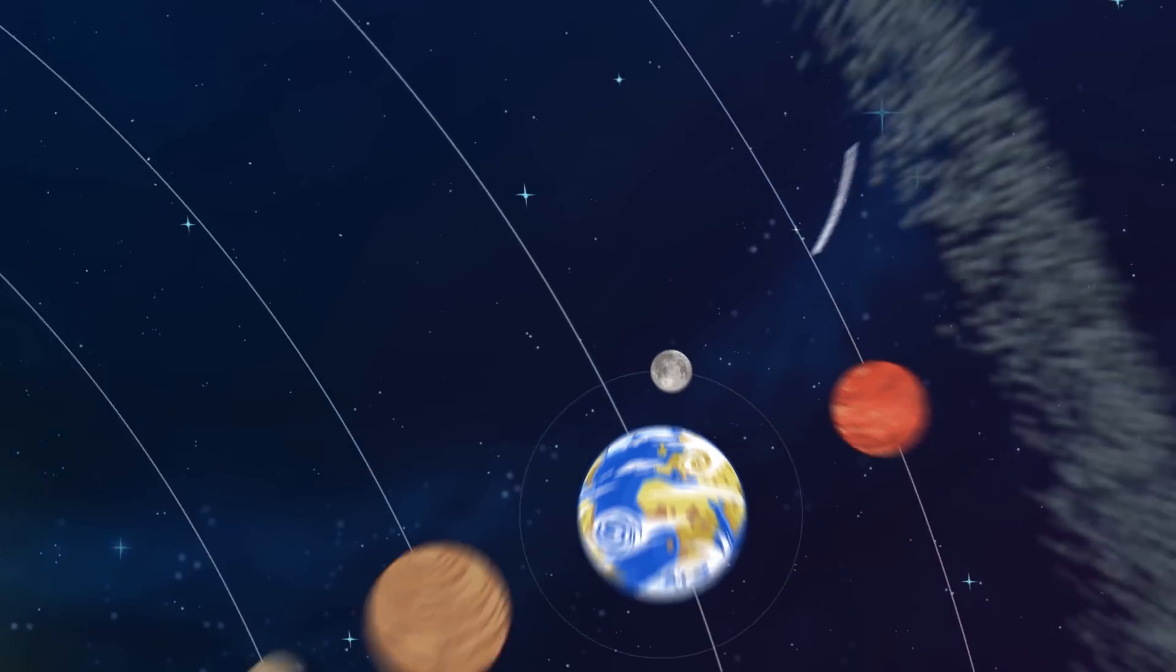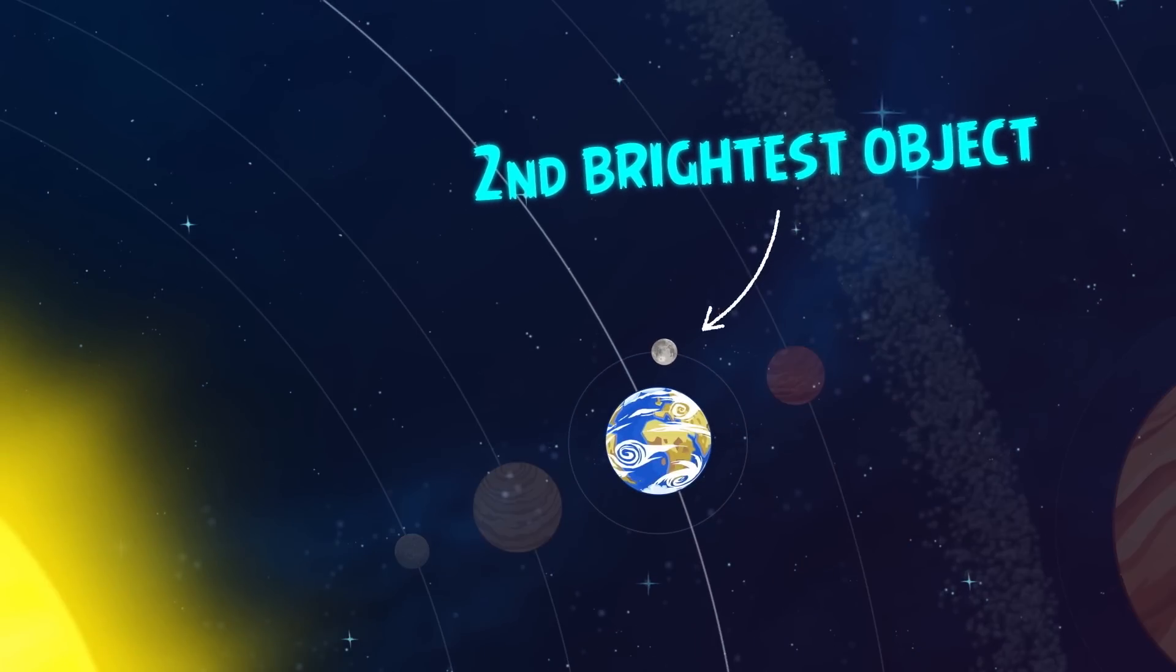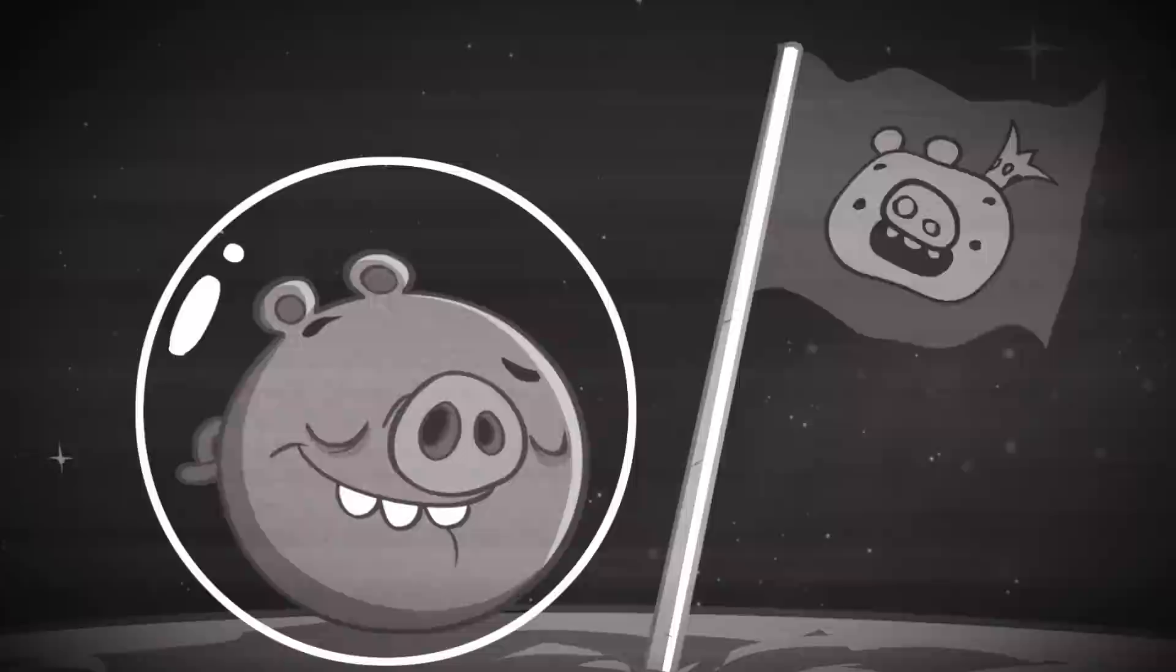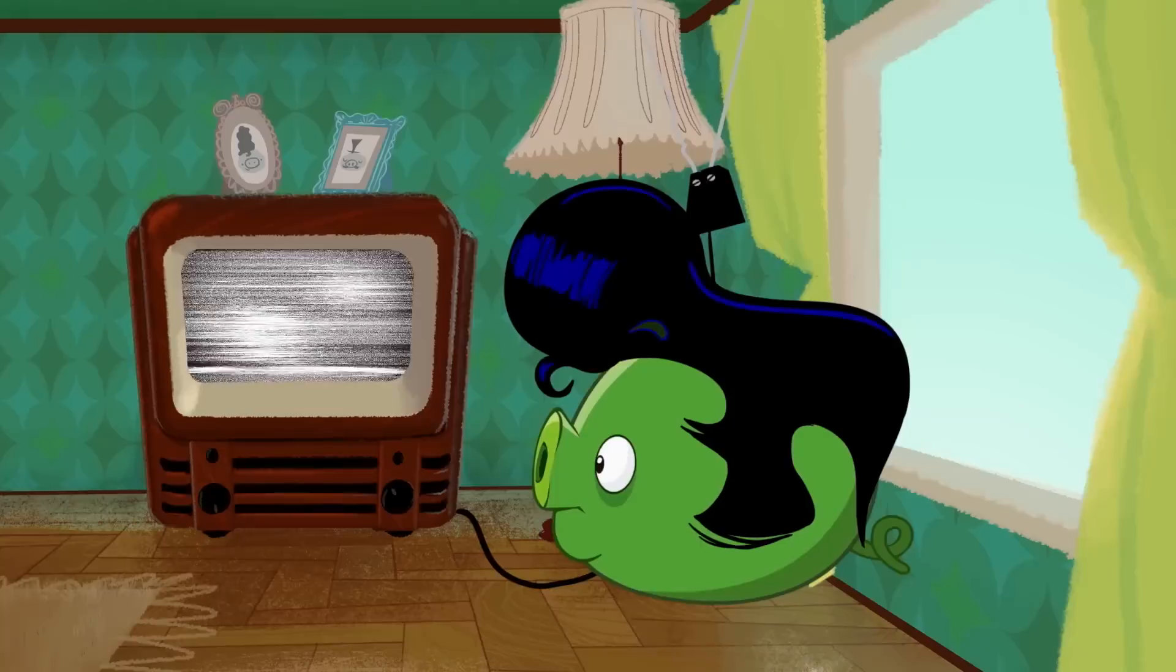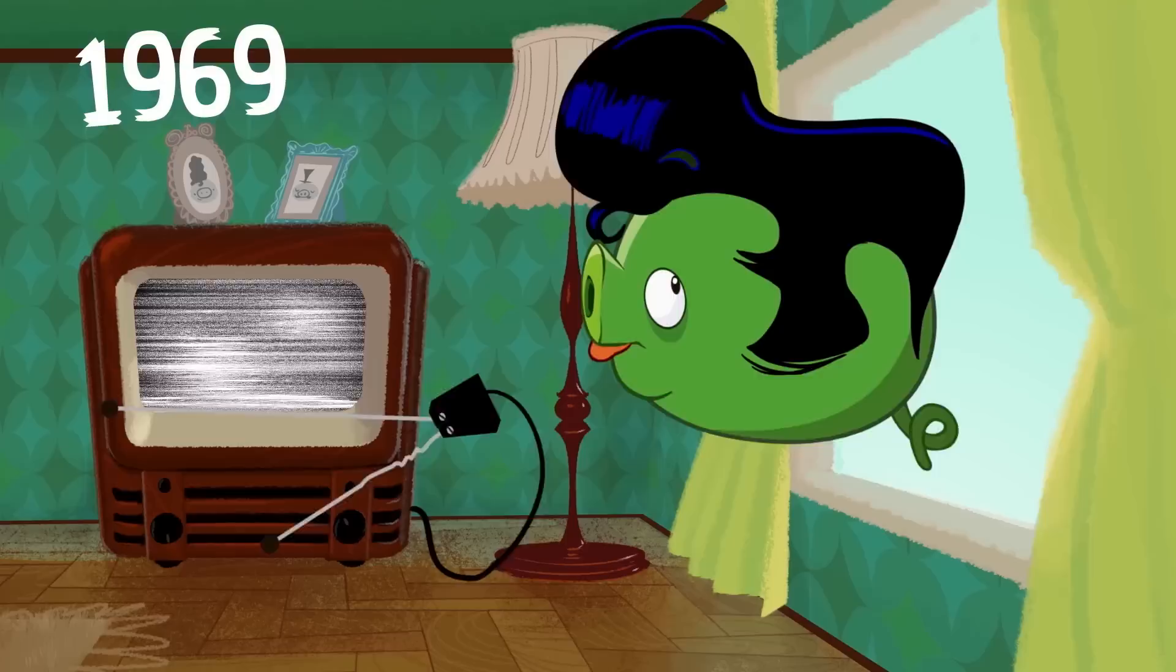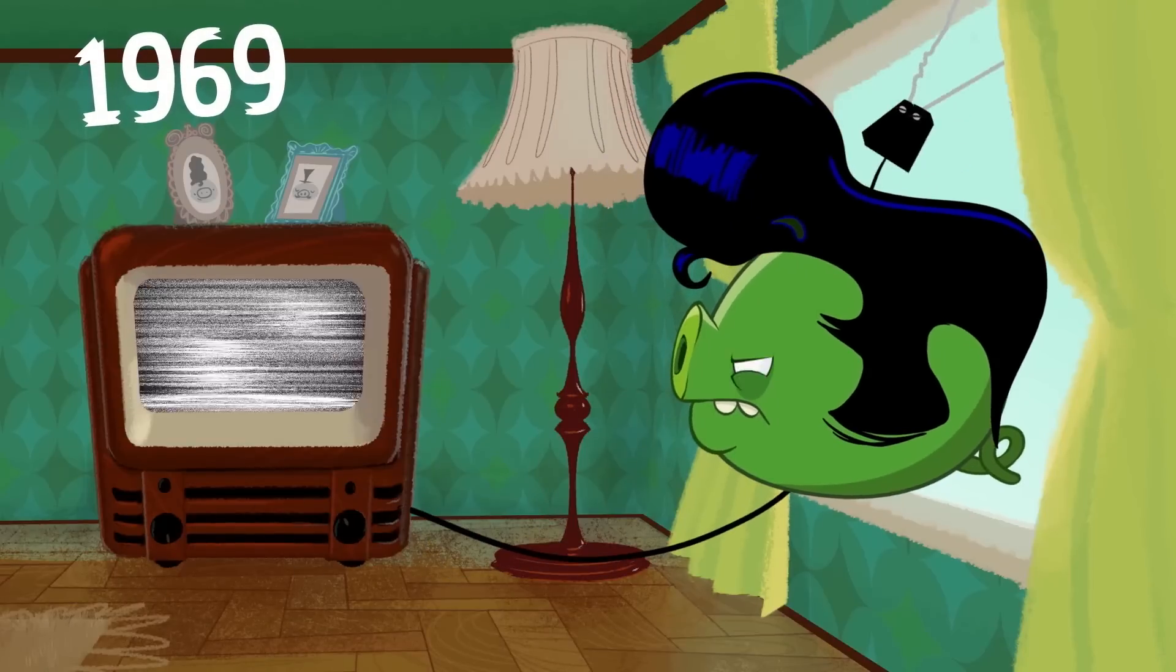The moon is the second brightest object that we see from space. It is also the only place in space where humans have landed. That took place in 1969 when Neil Armstrong was the first person to walk on the moon.